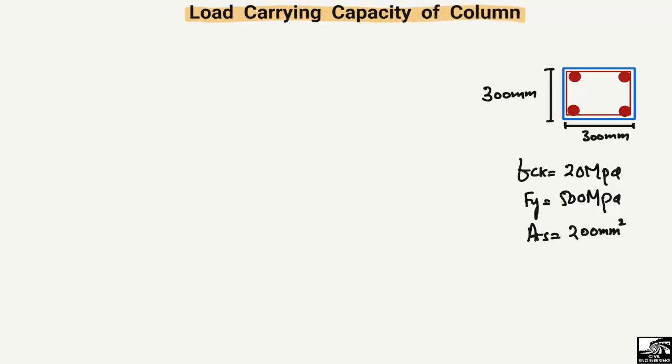Here the cross-sectional details of the column are given to us. The depth and the width of the column are also given. The depth of the column is 300 mm and the width is also 300 mm, which means it is a square column.